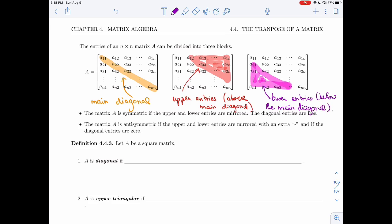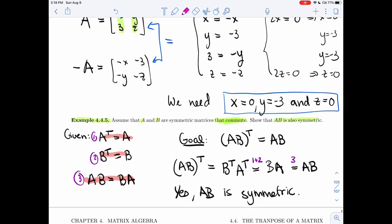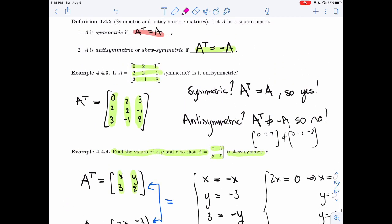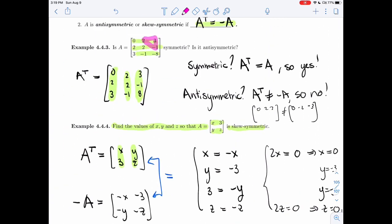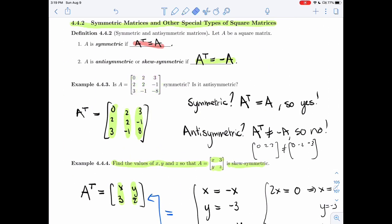All right, so the matrix A is symmetric if the upper and the lower entries are mirrored. Let's look at what we had over here. If we look at the upper, let's erase all of this.